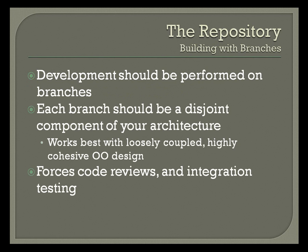Finally, we have branches — this is basically where we do all of our work. There are several ways to organize how you branch and merge. The method we'll go through today is one we've been using and refining, starting with Contech, then enhanced at DFWHC, and carried on through Unifurse. The approach is that each disjoint component in your architecture gets its own branch. This also somewhat forces code reviews and integration testing.